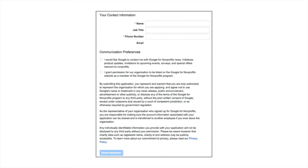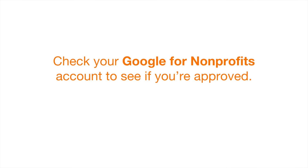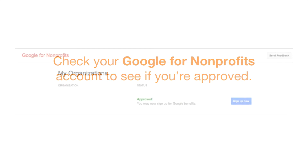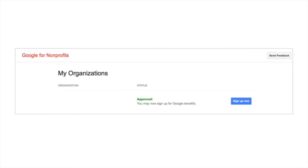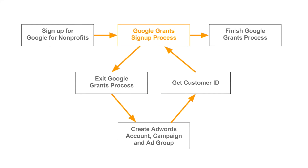Once you've submitted your application, you will have completed the Google for Nonprofits application process. It's really just a waiting game from here — you should receive a decision within two to three business days. While you're waiting, you can sign into your Google for Nonprofits account at any time to check the status. Once you're approved, you will receive an email notification and your status will change to Approved. We're then ready to move on to the next step: signing up for Google Grants.